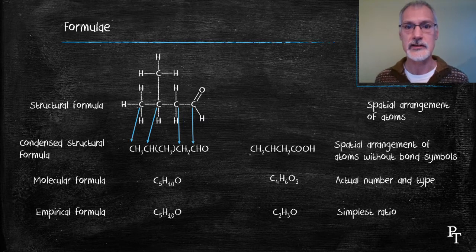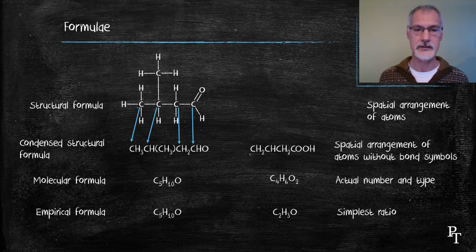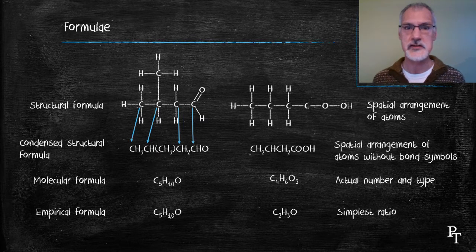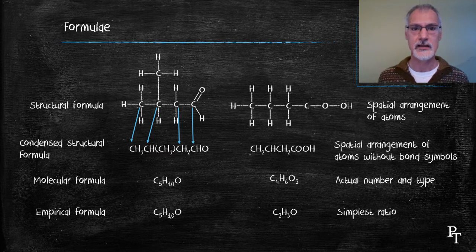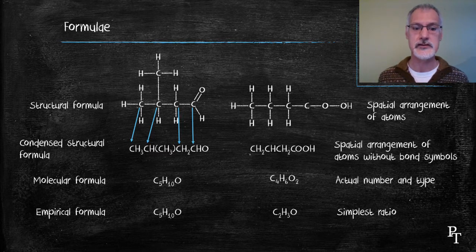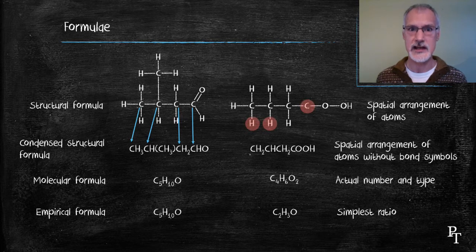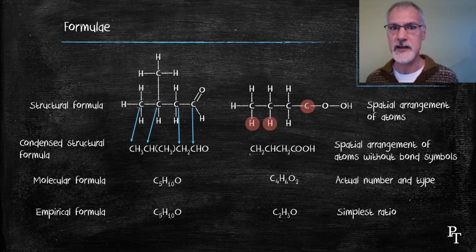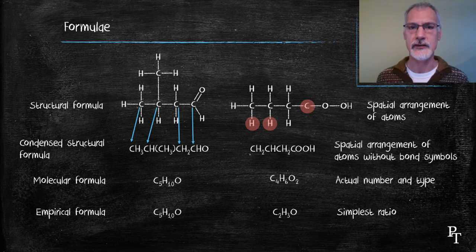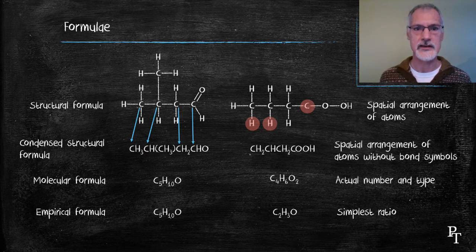Now, let's take this and turn it into a full structural formula. Here's my first attempt at drawing it. Now, you'll notice a few problems. First of all, the first two carbons have too many hydrogens attached to them, as dictated by the condensed formula. And lastly, the final carbon has only two bonds. So, I'm going to have to modify this structure.